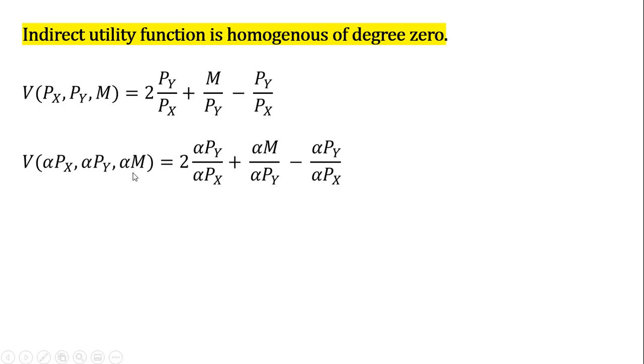Now here's our indirect utility function. We're going to multiply each variable by alpha. Alpha, for example, could be two - we're doubling all prices and all income.